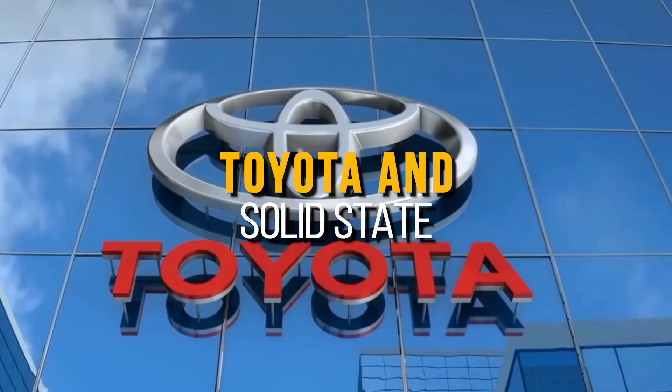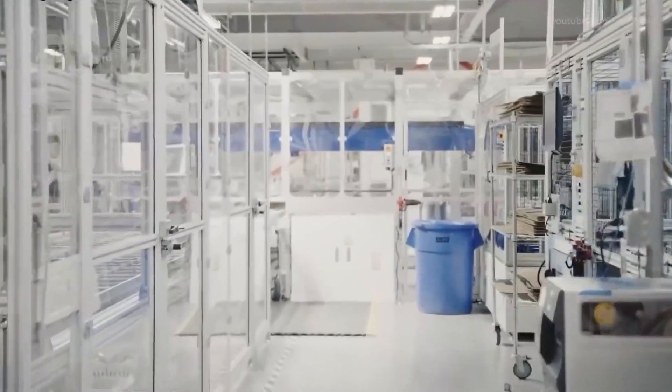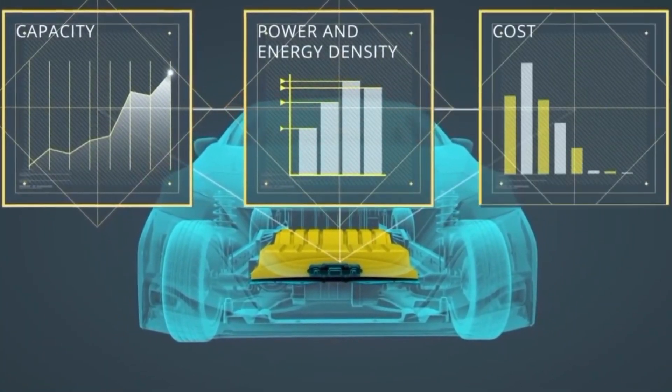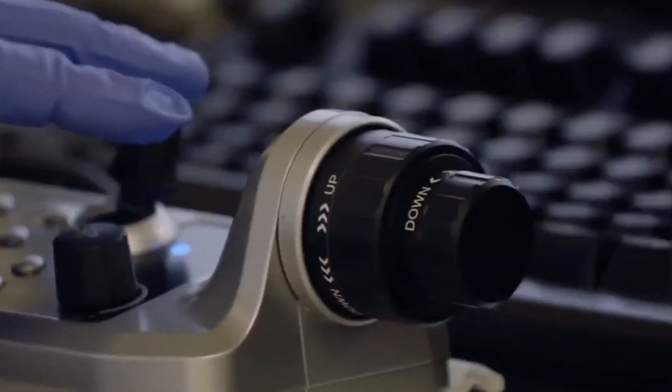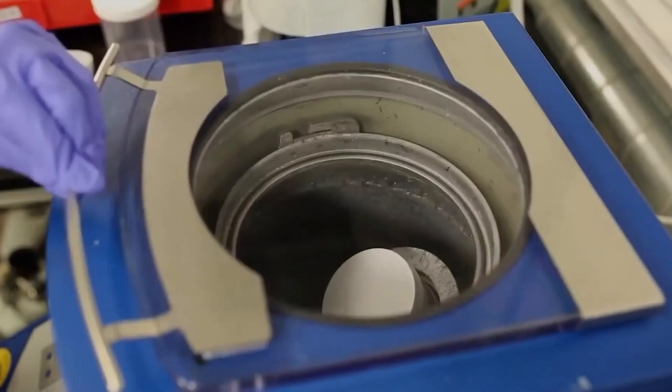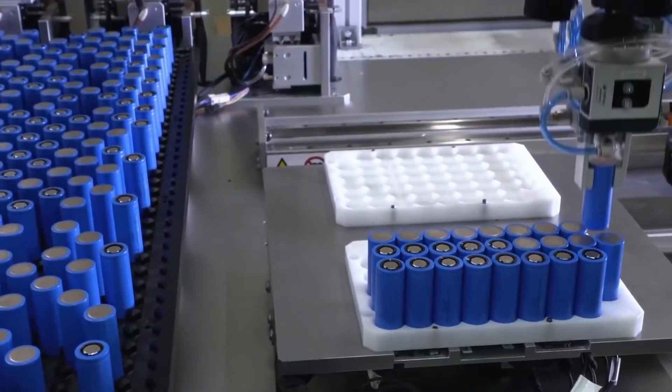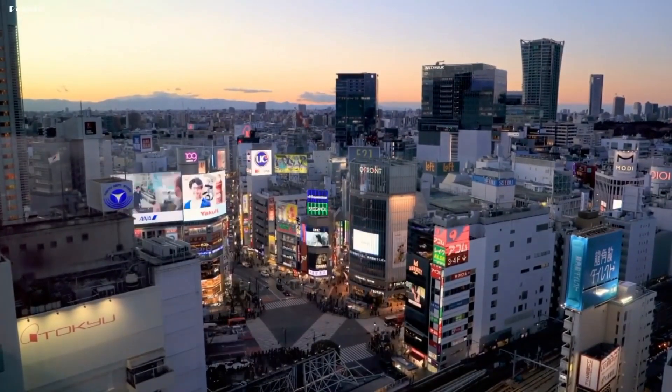Toyota is at the forefront of developing the first practical mass-produced solid-state battery, and by the mid-2020s, we hope to be the first company to sell an electric vehicle equipped with a solid-state battery. We have been working on this since 2012 with over 200 highly decorated and competent engineers working around the clock to create these batteries, and it is starting to pay off as we now hold over 1,000 solid-state battery patents, more than any other automaker.